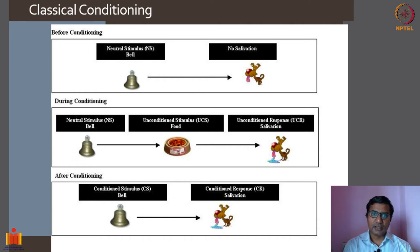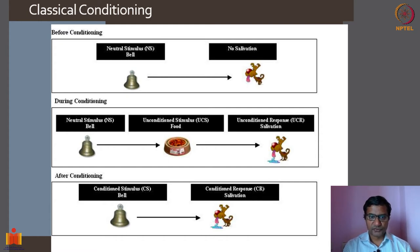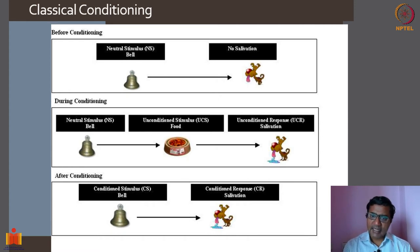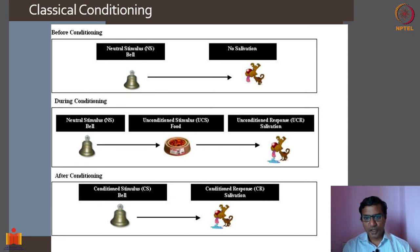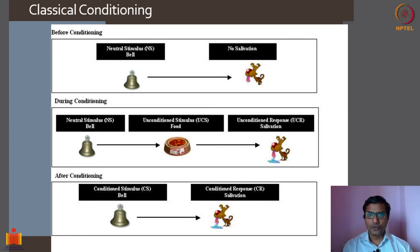This was an interesting finding because normally a bell should not make a dog salivate - food should. Pavlov did more experiments on this phenomenon and proposed classical conditioning. In this theory, there is a stimulus and a response. In the dog experiment, food causes the dog to salivate, so food is called the unconditioned stimulus, and salivating in response to it is called the unconditioned response.